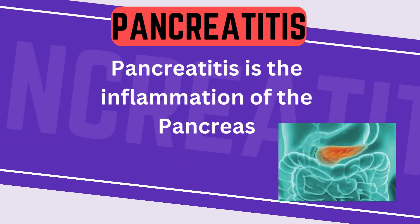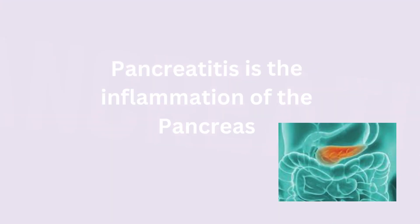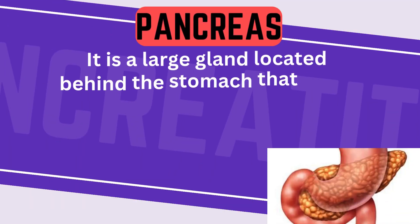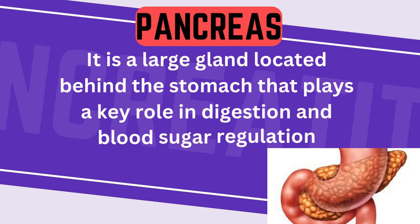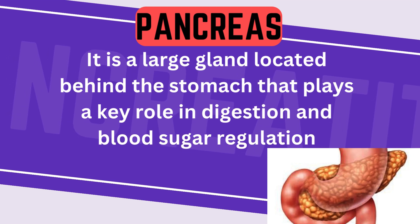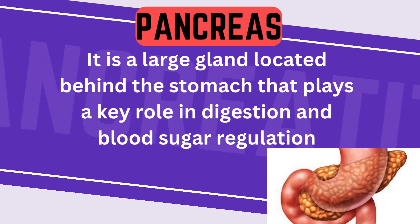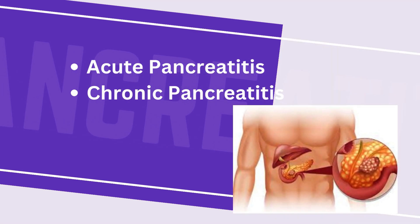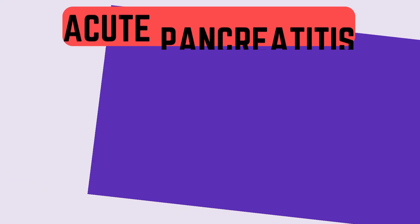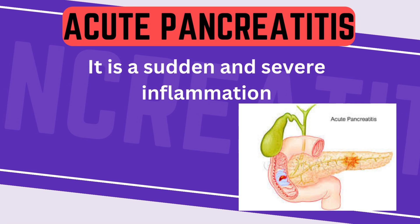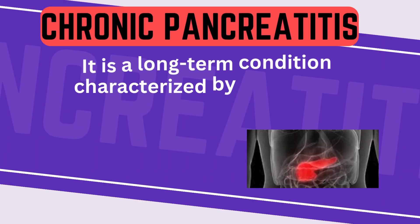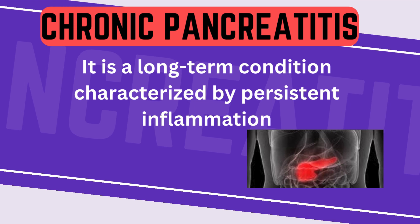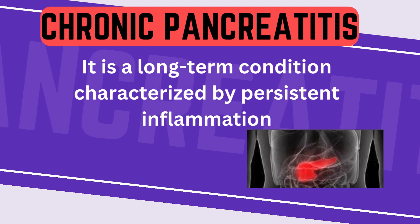Pancreatitis is the inflammation of the pancreas. The pancreas is a large gland located behind the stomach that plays a key role in digestion and blood sugar regulation. There are two forms of pancreatitis: acute and chronic. Acute pancreatitis is a sudden and severe inflammation, while chronic pancreatitis is a long-term condition characterized by persistent inflammation.